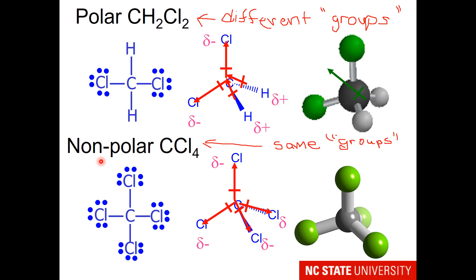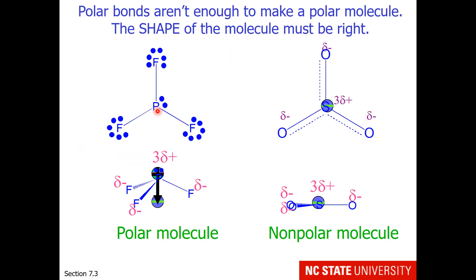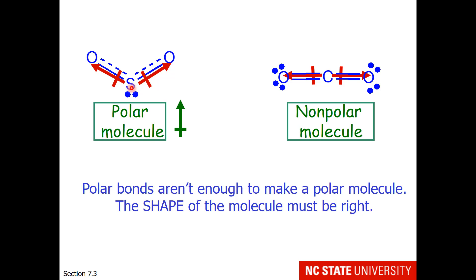Let's go back and look at some of the other examples. Phosphorus trifluoride has different groups — fluorines and a lone pair — so it is polar. Sulfur trioxide has the same group, all oxygens, so non-polar. Sulfur dioxide has different groups around the sulfur — oxygen and a lone pair — therefore it is a polar molecule. Carbon dioxide has the same groups about the carbon, both oxygens, so it is a non-polar molecule.